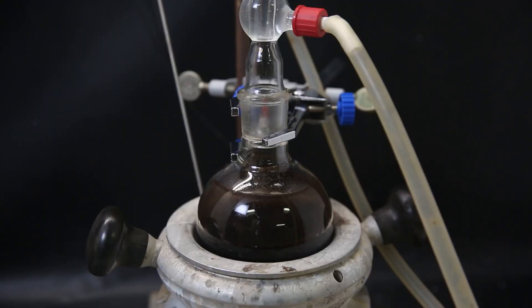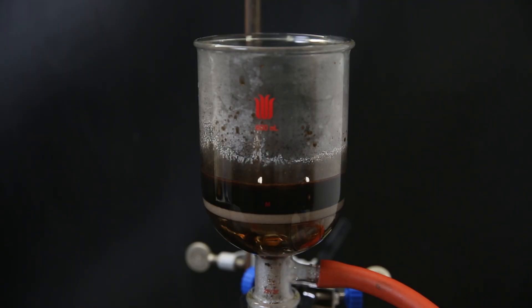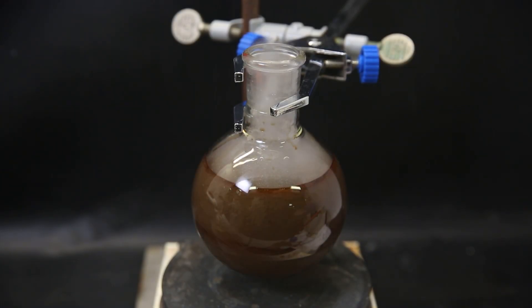When I come back, it has turned black, and I immediately filter it through a glass frit while it's still hot to remove any insoluble impurities. But only a tiny bit of solid was left on the filter. Then to the filtrate, I add concentrated hydrochloric acid until it is acidic and a precipitate forms.